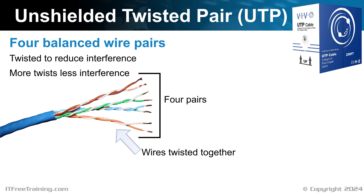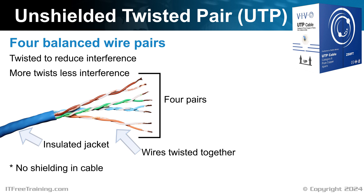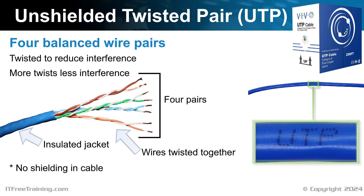The four pairs within a UTP cable are encased in an insulating jacket. This jacket does not offer electromagnetic shielding. However, this is typically not an issue if the cable is not placed near sources of significant electromagnetic radiation, such as fluorescent lights, motors, or heavy machinery. To determine the type of cable you have, simply refer to the markings printed along its length. In this example, the cable is UTP, so you will find UTP printed on the cable itself.